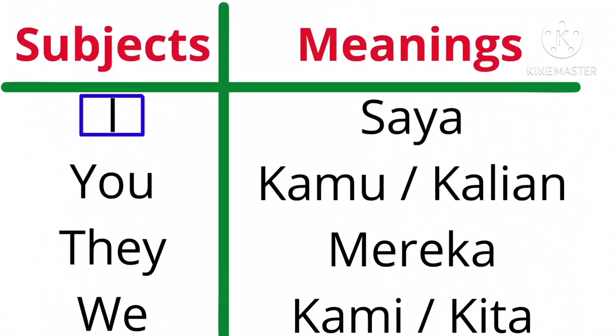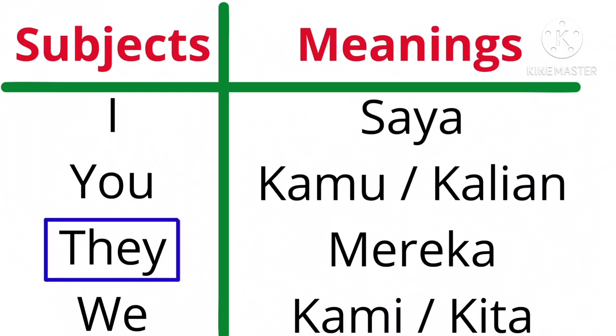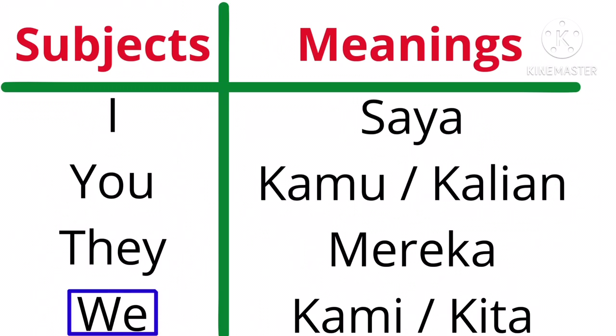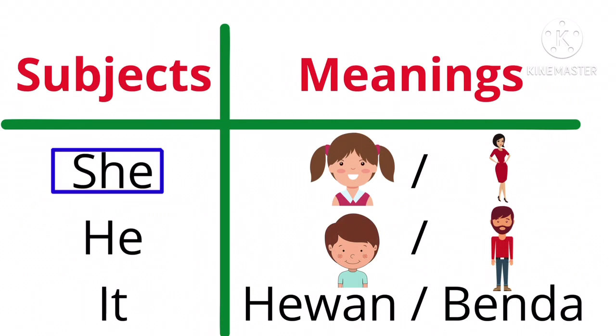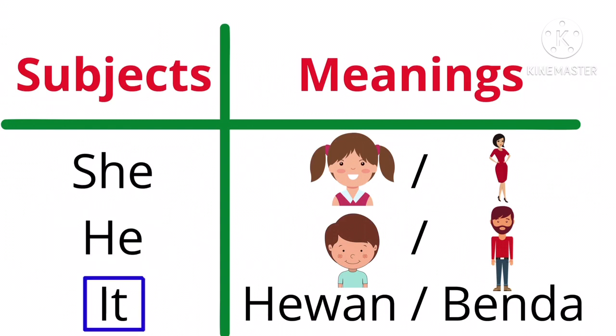I artinya saya, you artinya kamu atau kalian, they artinya mereka, we artinya kami atau kita, she adalah untuk anak perempuan atau wanita, he adalah untuk anak laki-laki atau pria, dan it itu untuk hewan atau benda.